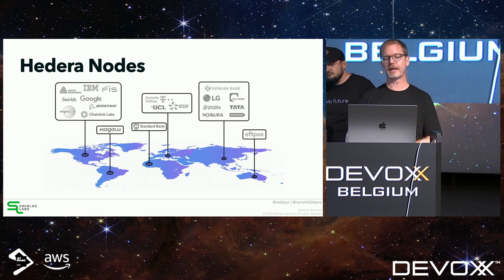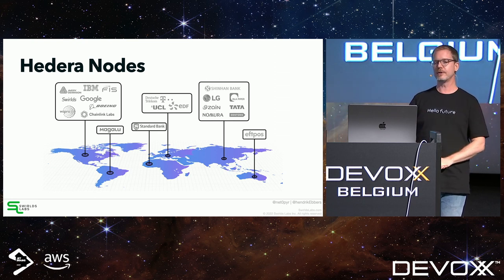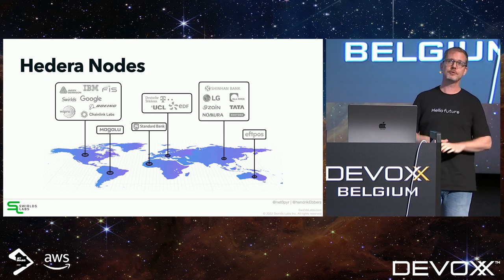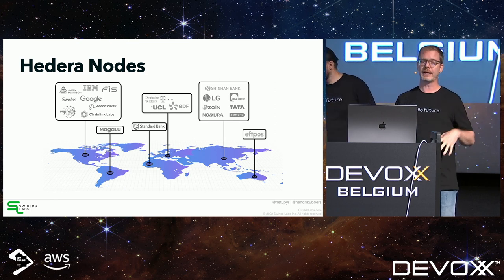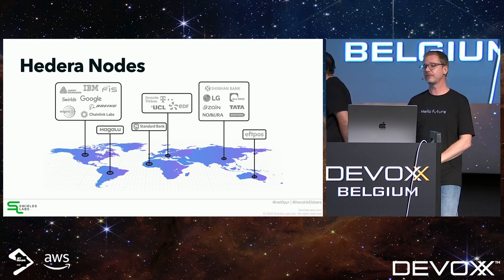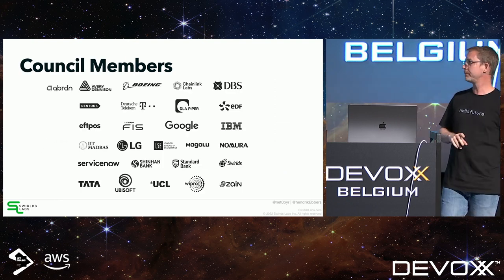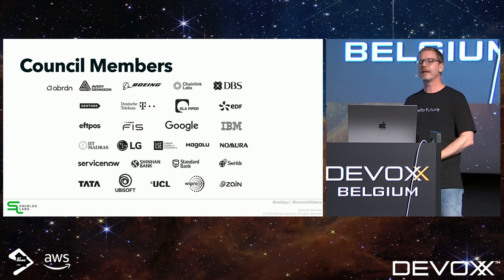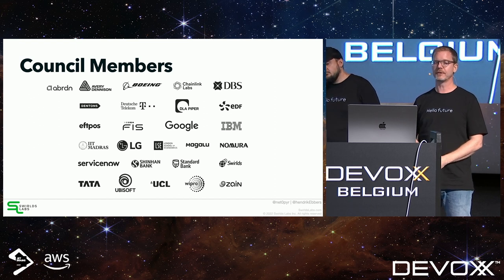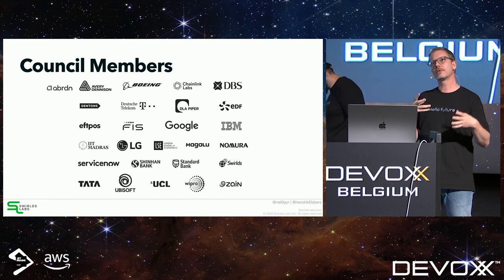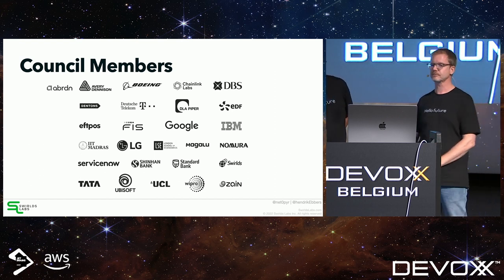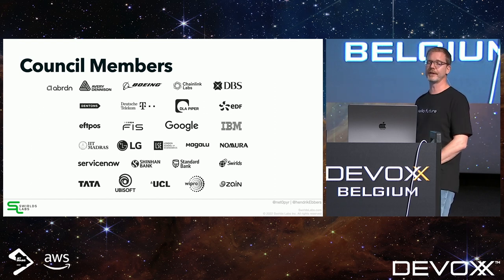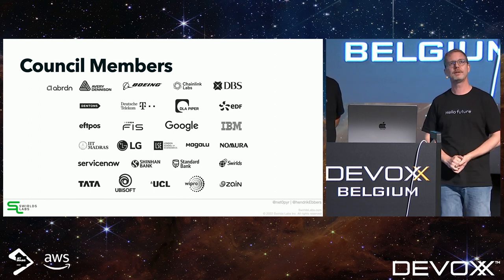Hedera is currently organized around a governing council — not fully distributed with community nodes yet, though that's on the roadmap. Council members include large companies across different industries, distributed globally. There's even a new member, Aberdeen, just announced on Friday. The governance rotates so companies switch after about two or three years, and all council members currently run nodes.